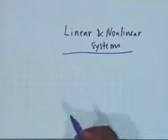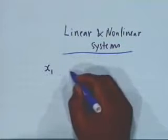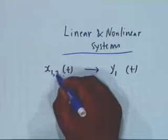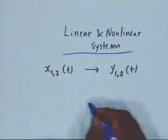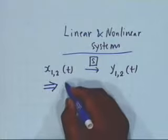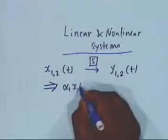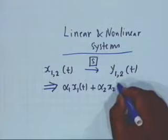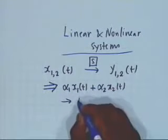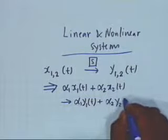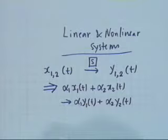The formal definition is: if x1(t) leads to y1(t) and if x2(t) applied independently leads to y2(t) in system S, then this implies that if you multiply x1 by an arbitrary constant alpha1 and superimpose this on alpha2 multiplied by the second input, it leads to the same multiplication and superposition of the outputs — that is, alpha1·y1(t) plus alpha2·y2(t). This is the formal definition of a linear system. If this is obeyed, the system is said to be linear.